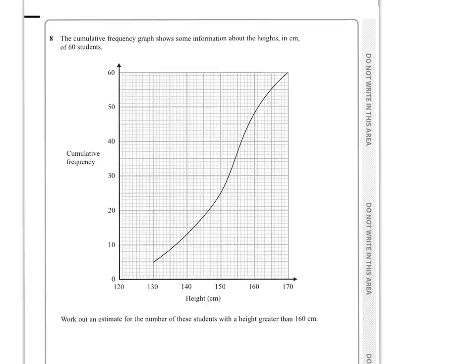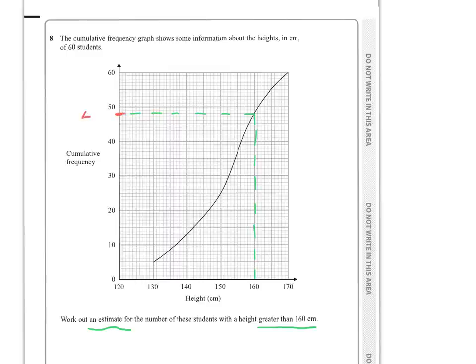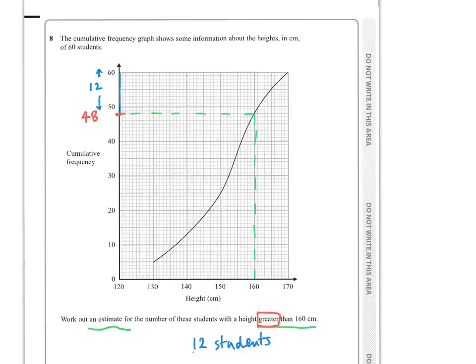Question 8. The cumulative frequency graph shows information about the heights in centimetres of 60 students. We have to work out an estimate for the number of students with a height greater than 160 centimetres. Drawing a line at 160, I can see we're on the 48 mark. So students with height greater than 160 centimetres leaves 60 minus 48, which is 12 students in total.